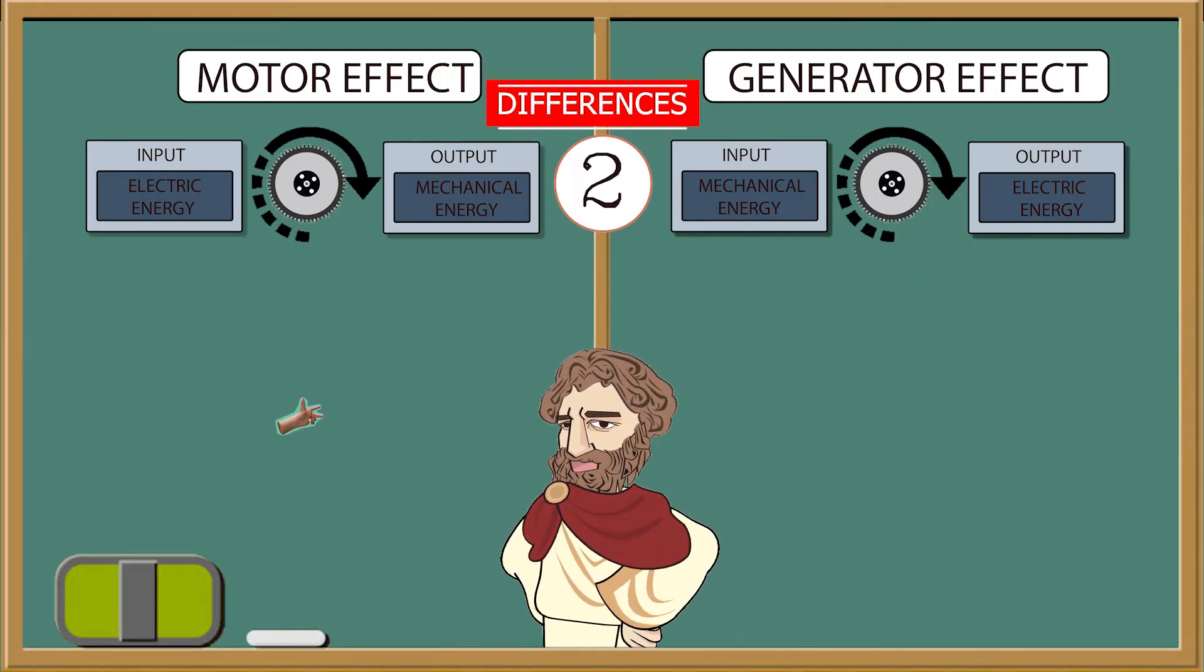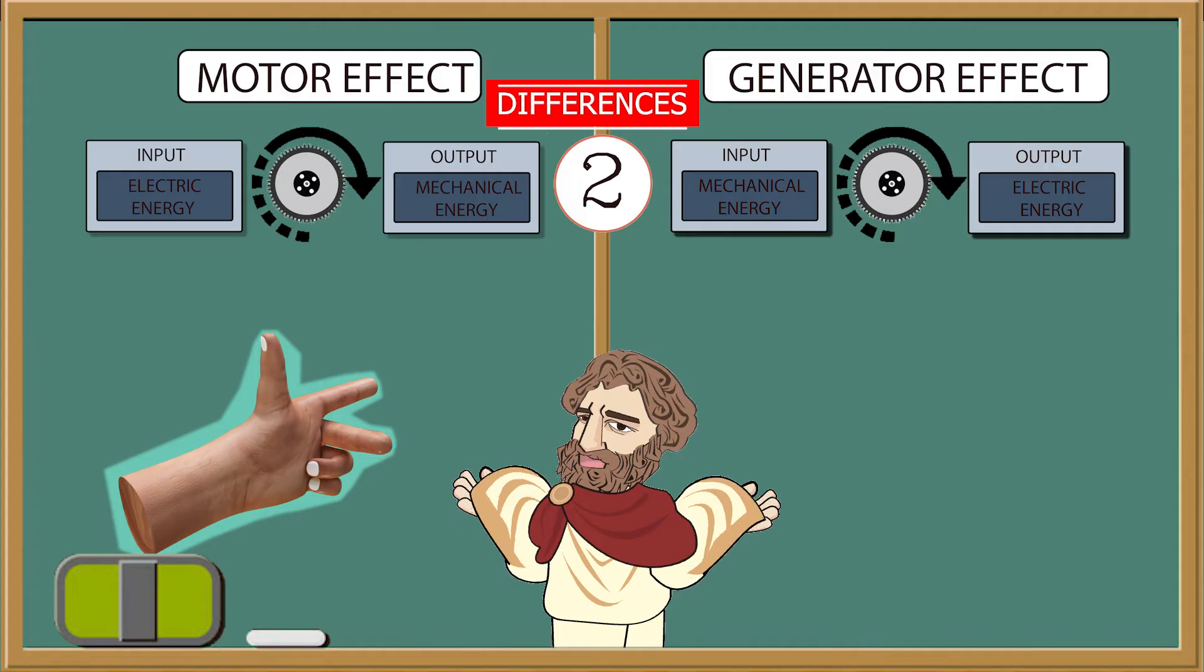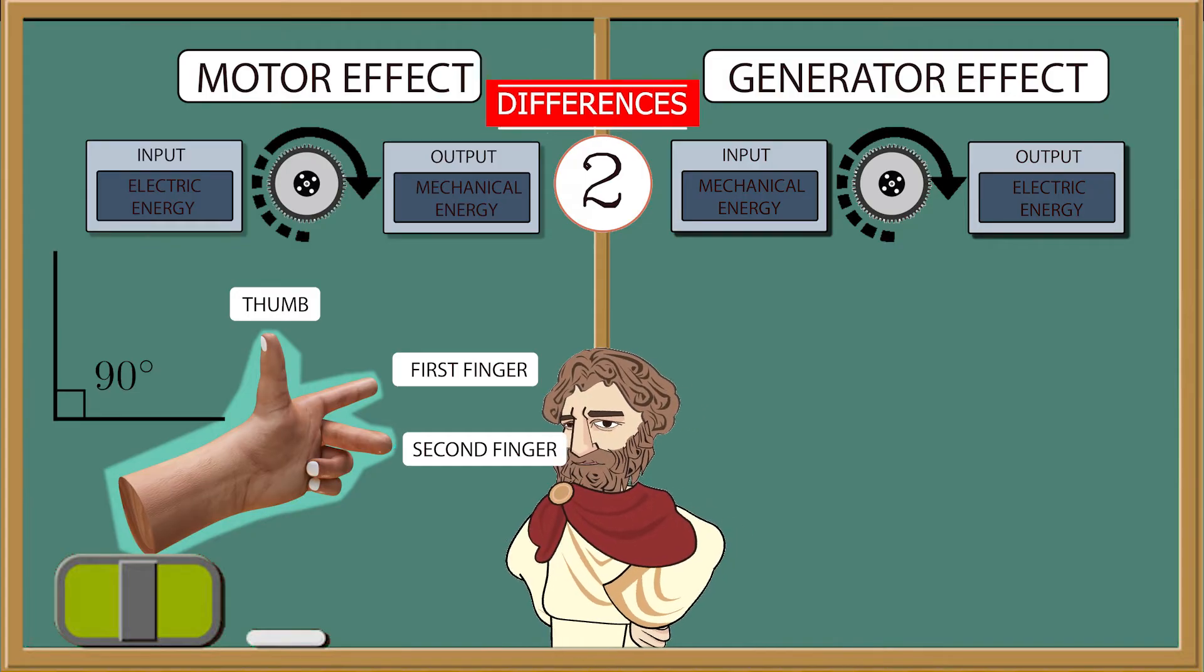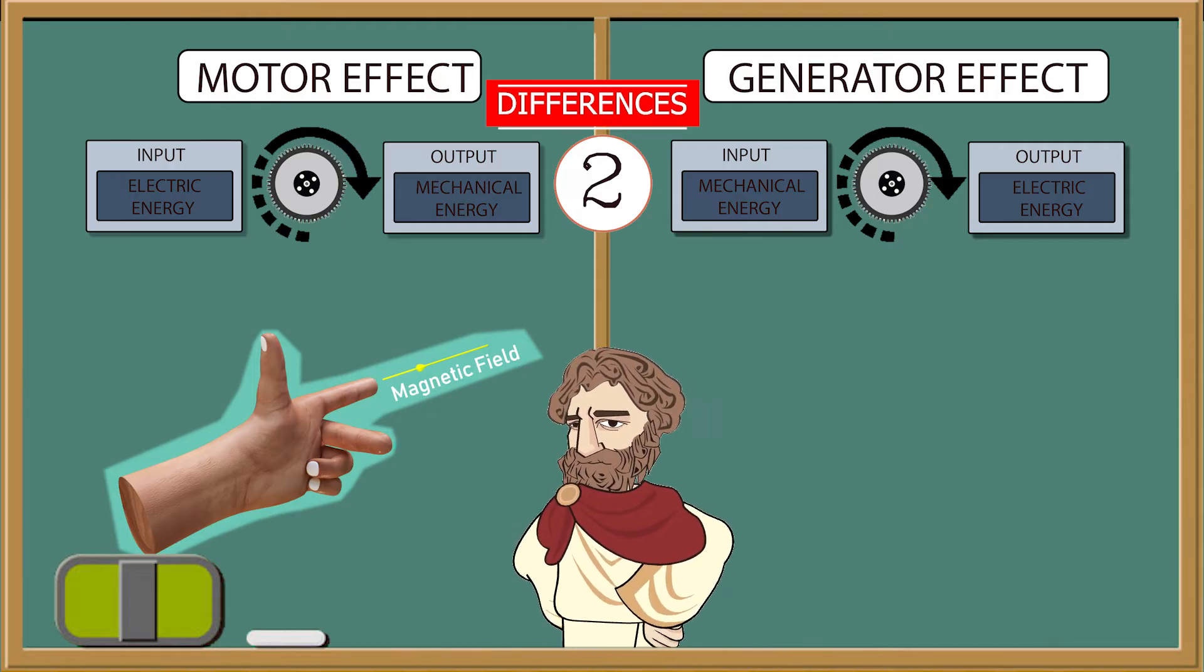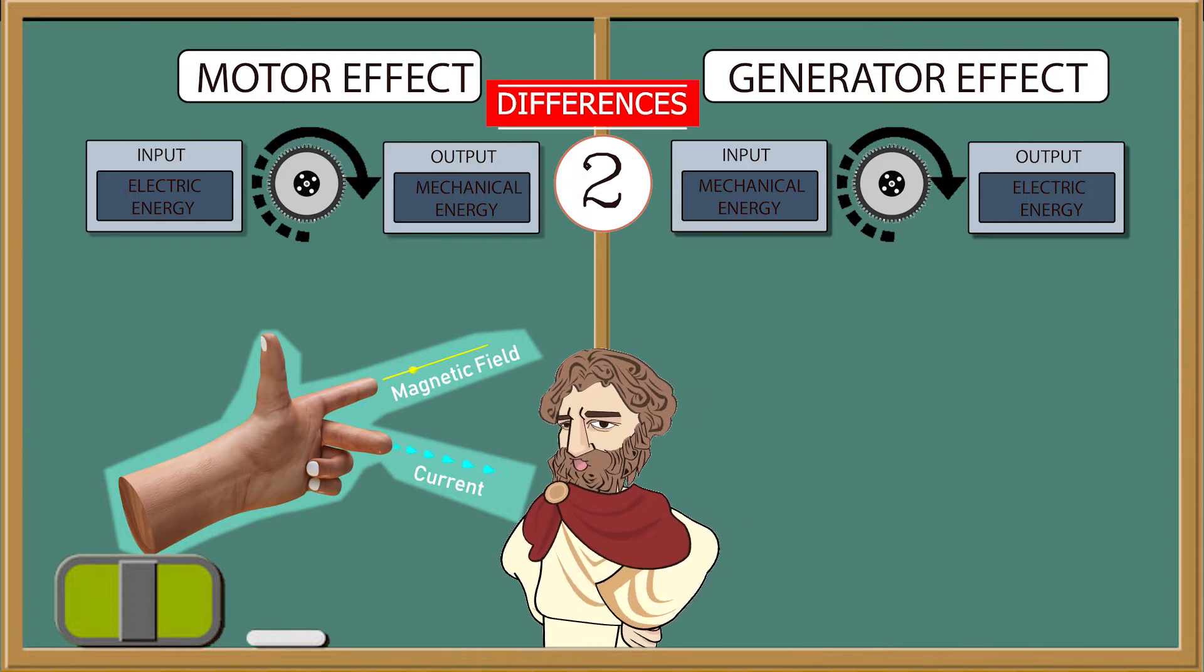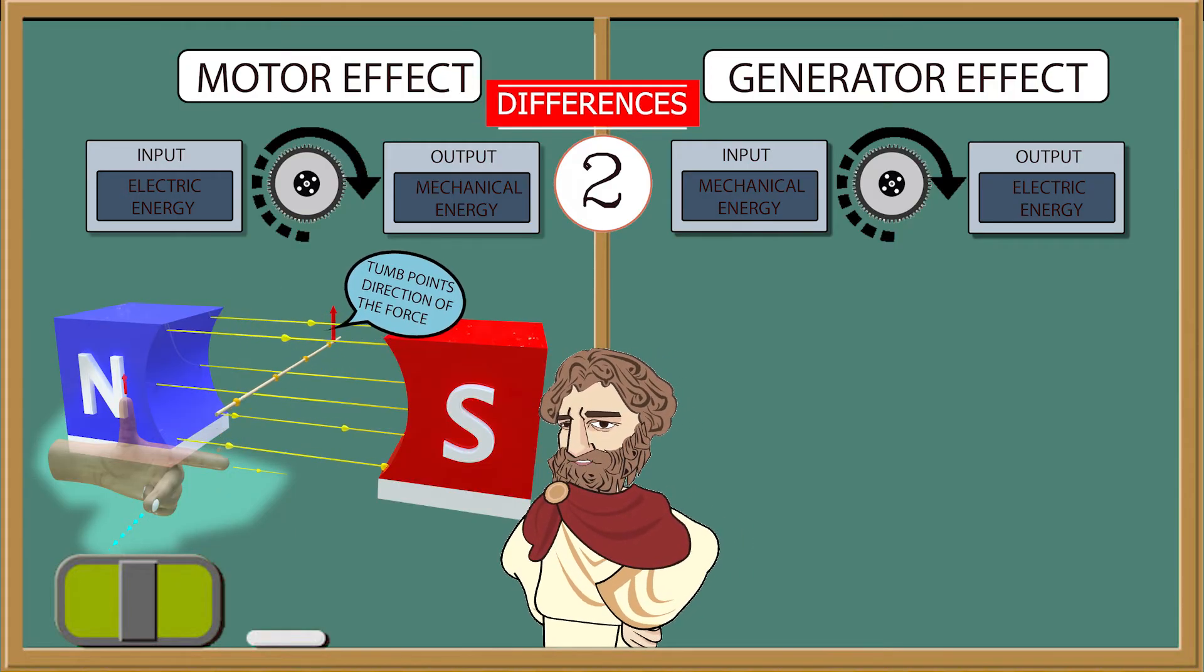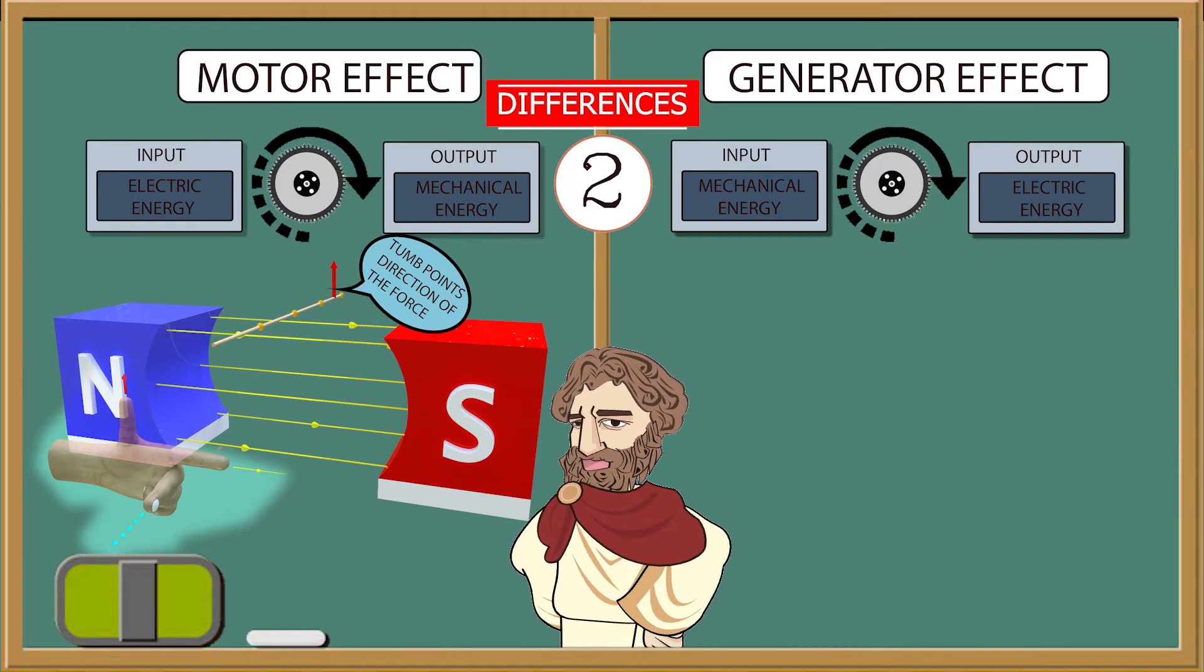The motor effect follows Fleming's left hand rule. How can we use Fleming's left hand rule? First place your thumb, first finger and second finger so they were at right angles as shown. Now point your first finger in the direction of the magnetic field from north to south. Now point your second finger in the direction of the conventional current, in other words positive to negative terminal. Finally, the direction that your thumb is pointing shows you the direction of the motion of the wire. In other words, direction of the force.